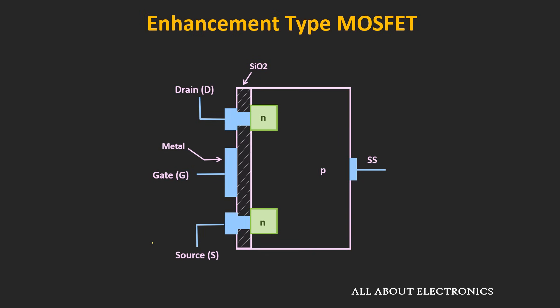The substrate is made up of P-type material and through the metallic contacts the drain and source terminals are connected to the N-type material. Similar to the depletion type of MOSFET, the oxide layer isolates the gate terminal and the P-type substrate, but here unlike the depletion type of MOSFET, there is no channel between the drain and the source terminal.